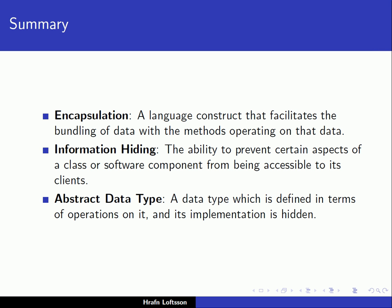In summary, we have been talking about three concepts. Encapsulation is a language construct that facilitates the bundling of data with the methods operating on that data. Information hiding is the ability to prevent certain aspects of a software component from being accessible to its clients. And an abstract data type is a data type defined in terms of operations on it, with its implementation hidden.